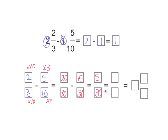Now 5 over 30 can be reduced even further. What are they both divisible by? Both numbers are divisible by 5. So 5 divided by 5 is 1 and 30 divided by 5 is 6. So we have 1 over 6. But remember the 1 whole number, so our answer is 1 and 1 sixth.